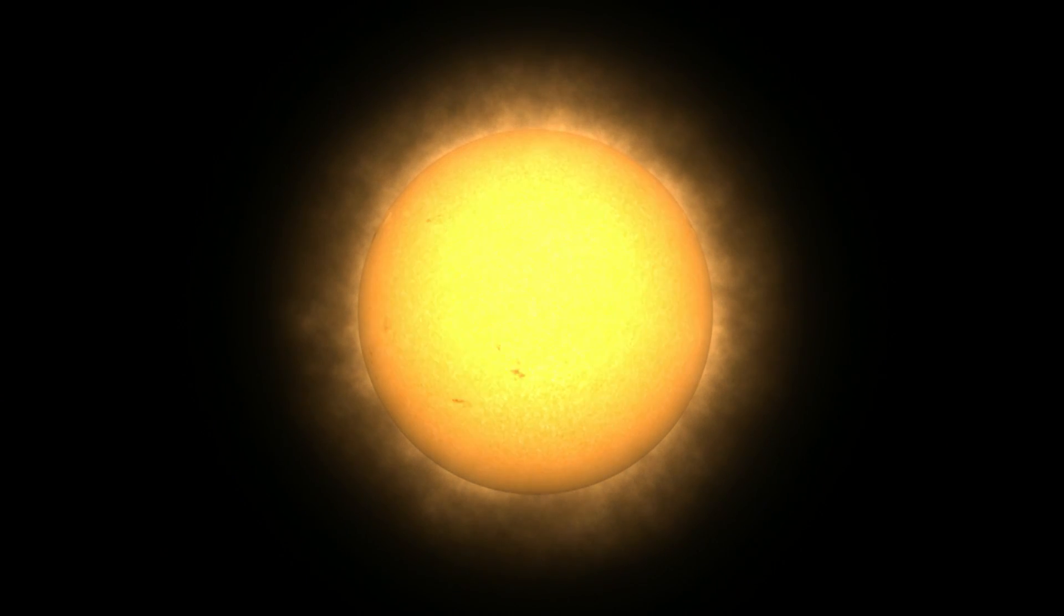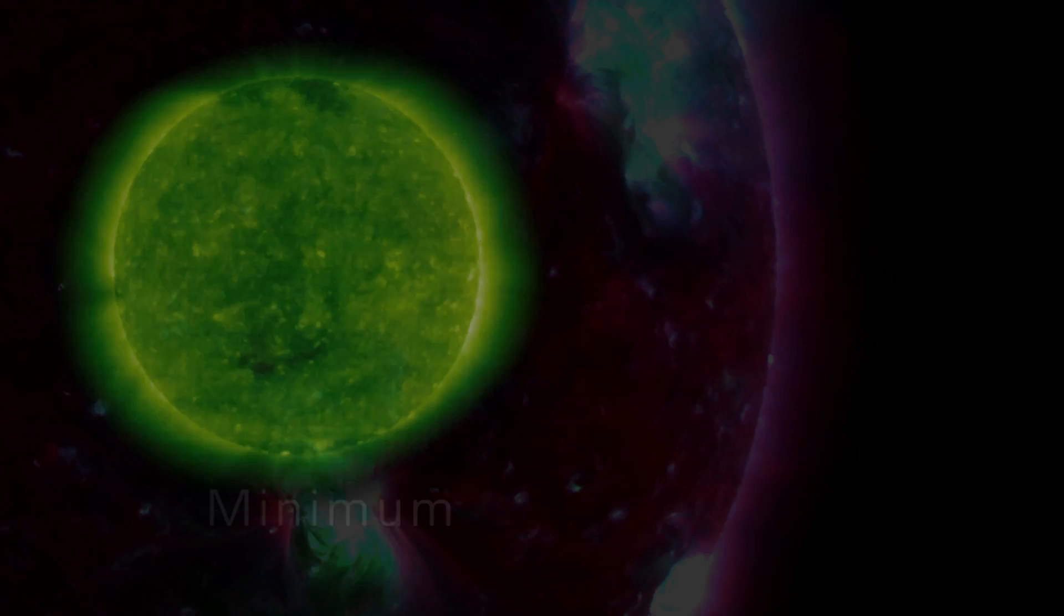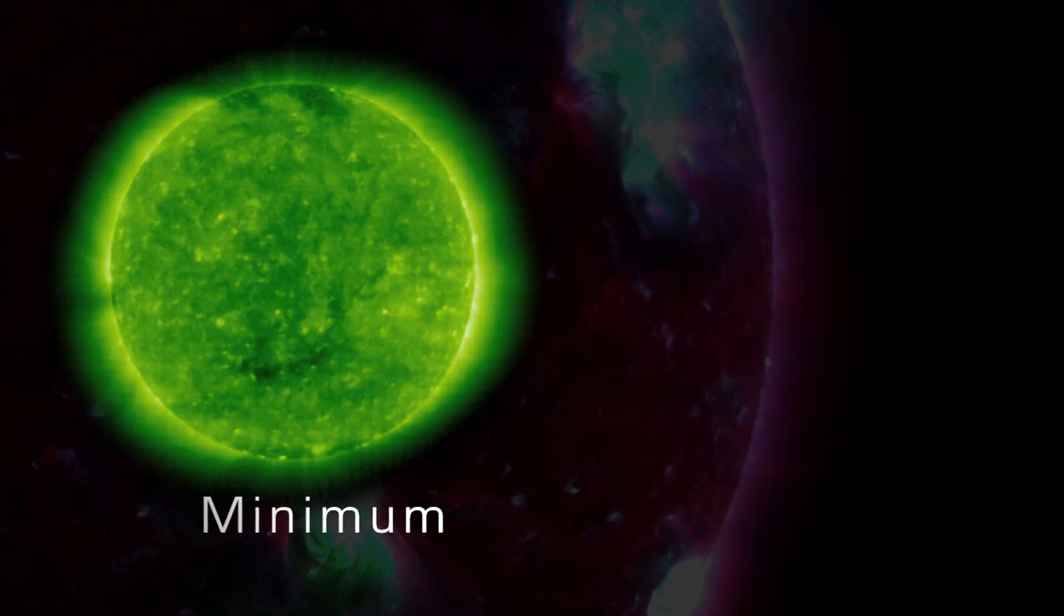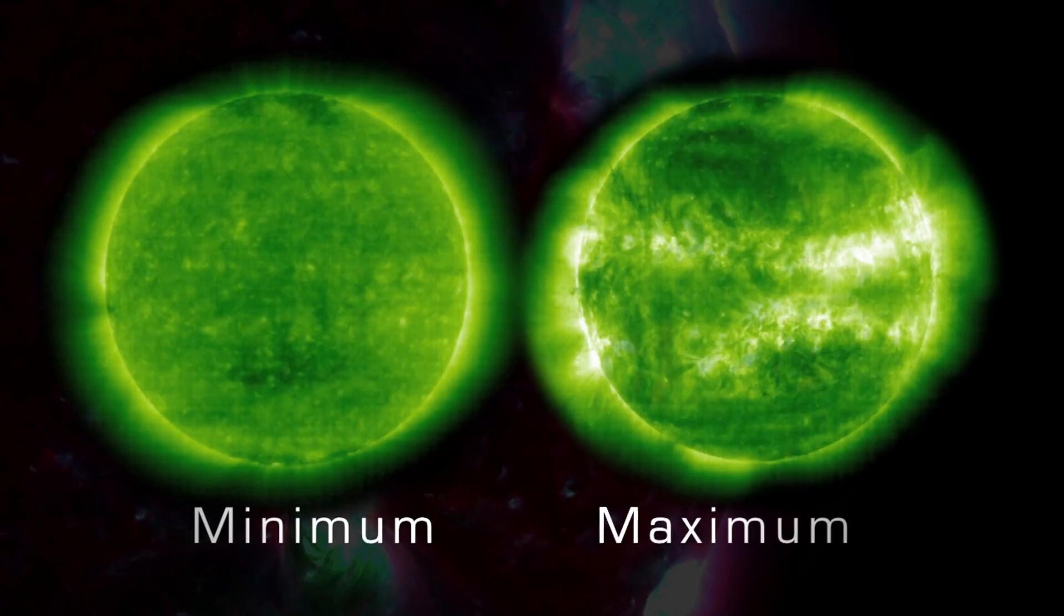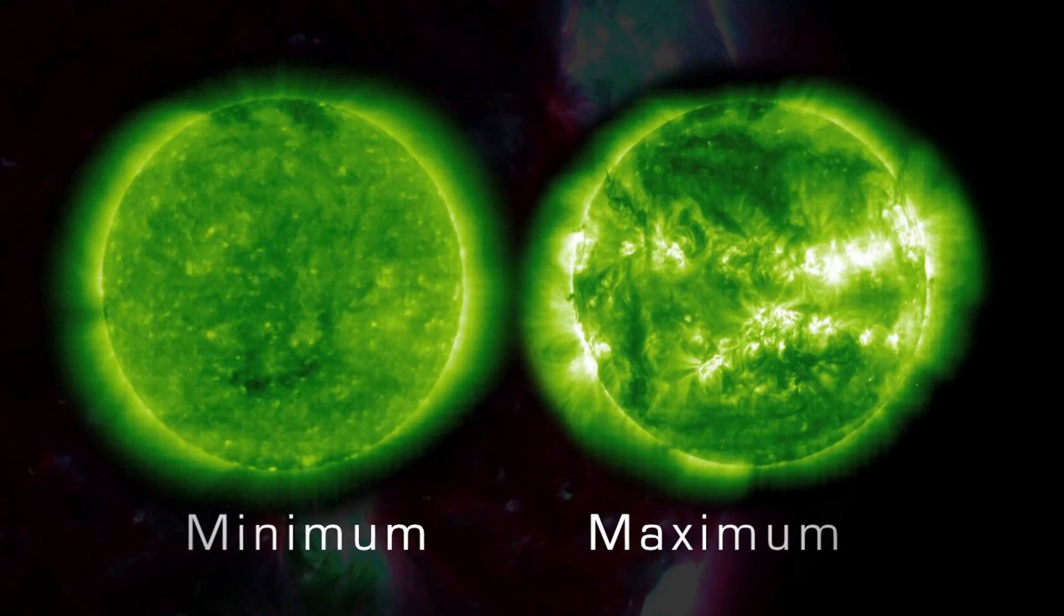During one cycle, the number of sunspots, a good indicator of solar activity, goes from low to high and back down to low. Solar minimum represents a period of time when sunspot numbers are relatively low, and solar maximum represents a period when sunspot numbers are relatively high.